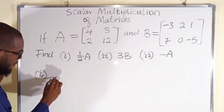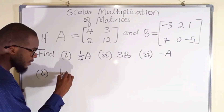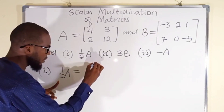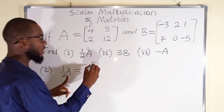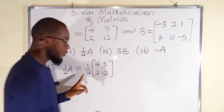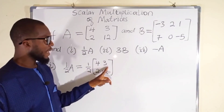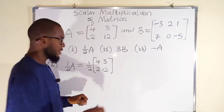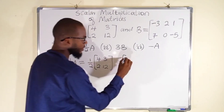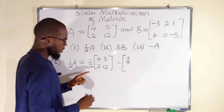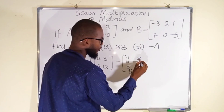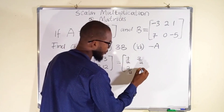Half of A is exactly equal to 1 over 2 multiplied by matrix A, which we have here as [4, 2, 3, 12]. So we are going to use this 1 over 2 to multiply every single element independently in this matrix. This becomes: half of 4 is the same thing as 4 over 2; half of 2 is the same thing as 2 over 2; half of 3 is the same thing as 3 over 2; and finally half of 12, which is the same thing as 12 over 2.